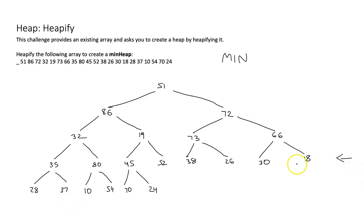Coming from bottom right to left, the first element that has children is 45. I'm checking: is 45 less or equal than the children? That is not the case — this is a min-heap, so I have some sinking to do. When we heapify, we only sink. When we add new elements one at a time, we always put them at the bottom and only swim. So that's a key difference: when heapifying, we only sink.